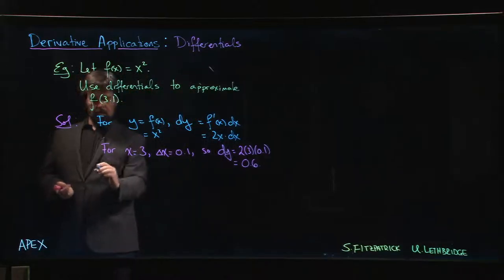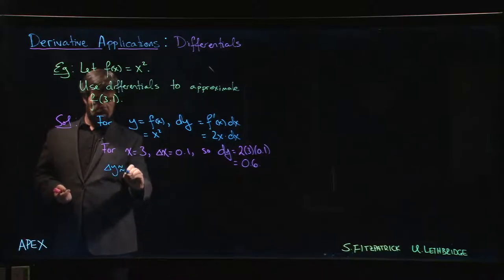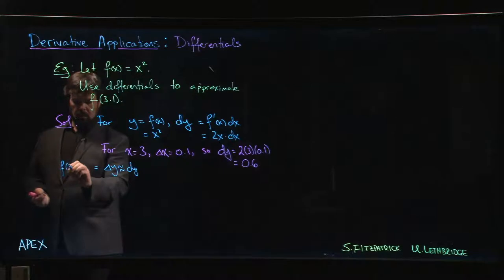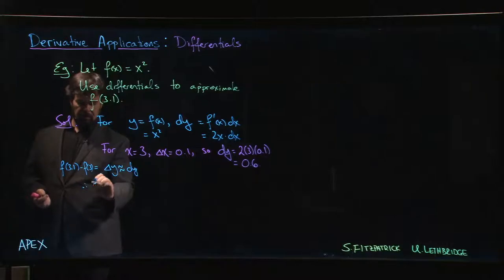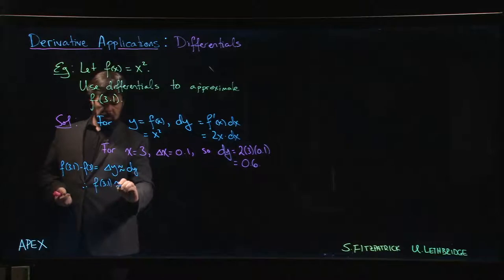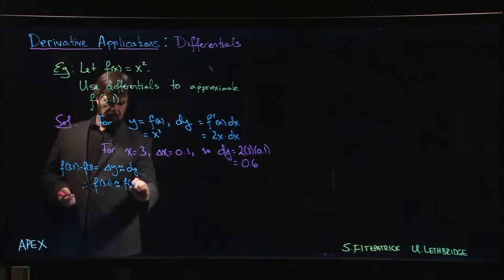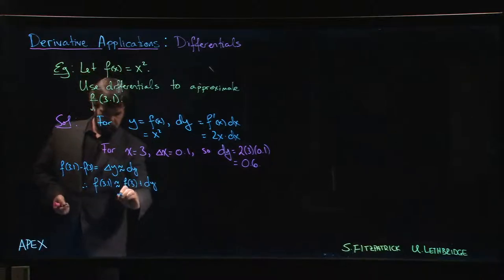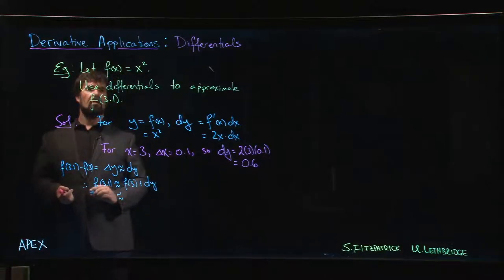Well, we remember that delta y is approximated by dy, and delta y is f(3.1) minus f(3). So that means f(3.1) is approximately f(3) plus dy.